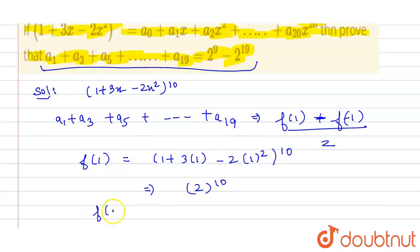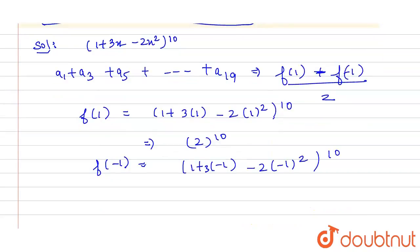And also f of minus 1 will be equals to 1 plus 3 into minus 1 minus 2 into minus 1 square raised to power 10. So it will be equals to 1 minus 3 minus 2 raised to power 10 that is 4 raised to power 10.